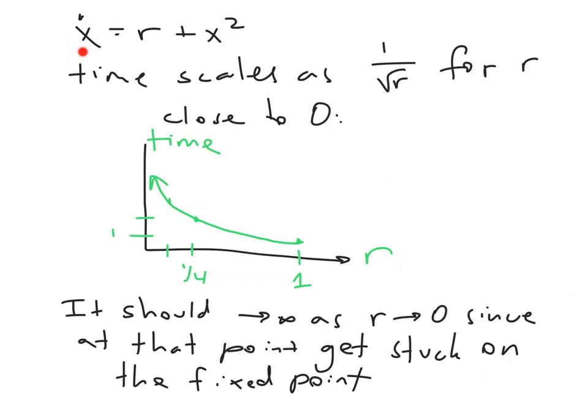So the differential equation we were considering was x dot equals r plus x squared, and we found that the time scales as 1 over the square root of r for r close to 0. Those are the values of r that we care about, and those are the values of r where things really take a long time through the bottleneck. And so this is what that curve looks like. Here's r, and here's the amount of time it will take to get through the bottleneck. And it diverges as we approach r equals 0.